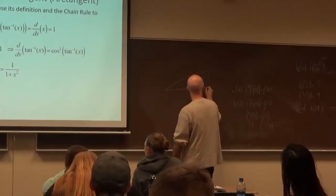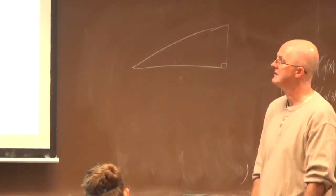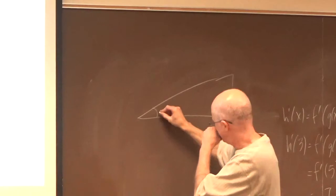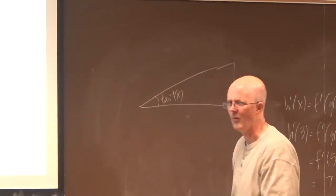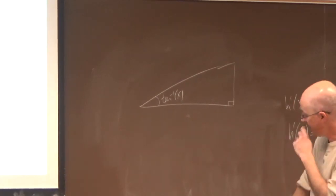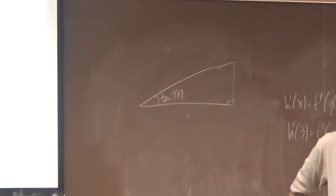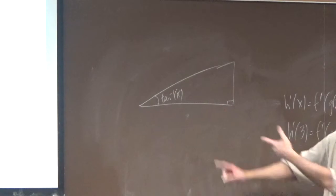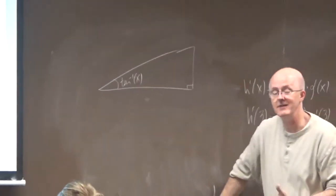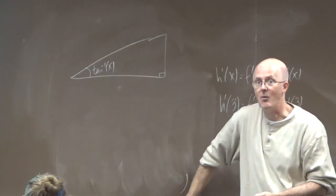Draw a right triangle and label one of the angles as inverse tangent of x. What? Why can I do that? Well, remember, you can think of the input to cosine, sine, and tangent as being angles if you want. Therefore, you can think of the outputs of the inverse sine, inverse cosine, and inverse tangent as being angles if you want. And I want to here.